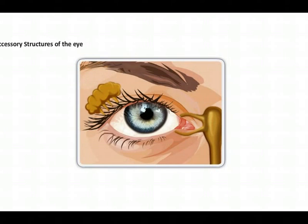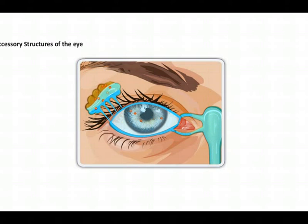It's also important to know how the eye secretes tears and what contributes to the wetness of the eye. The eye is surrounded by the lacrimal apparatus, which consists of various glands and ducts responsible for the wetness and tears of the eye. The lacrimal apparatus is a group of structures that produce and drain lacrimal fluid, or tears.